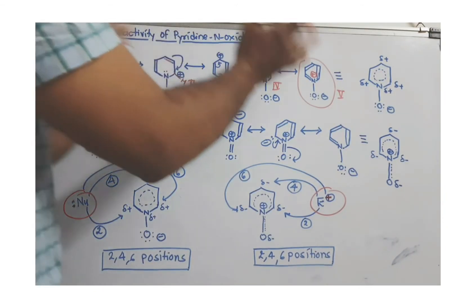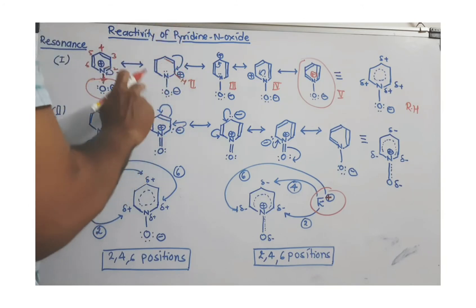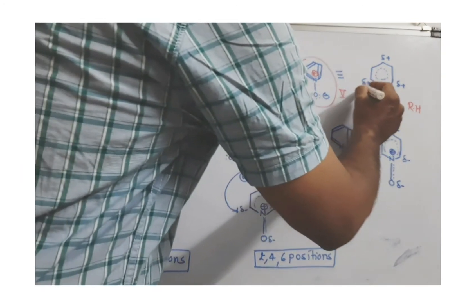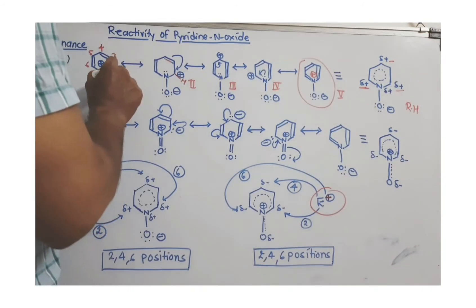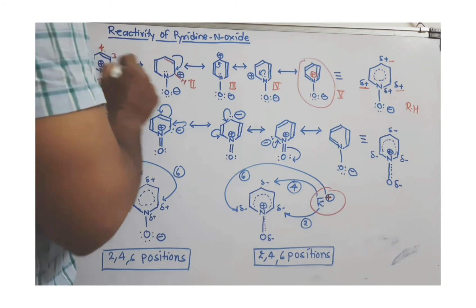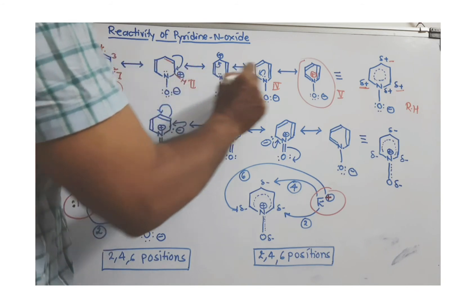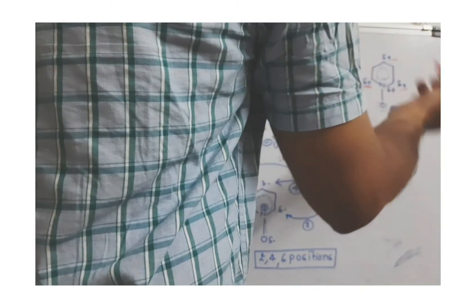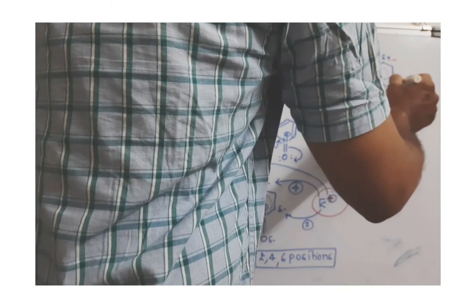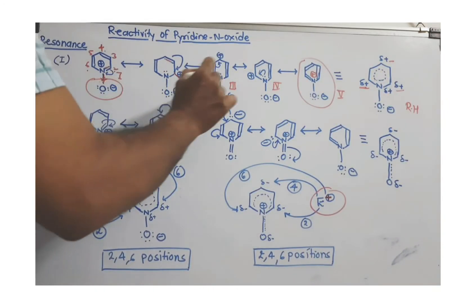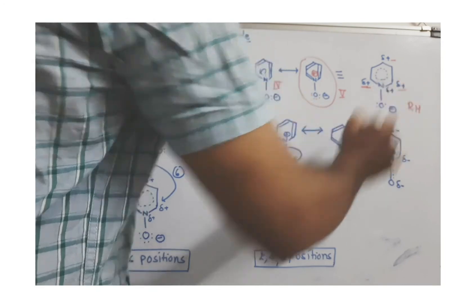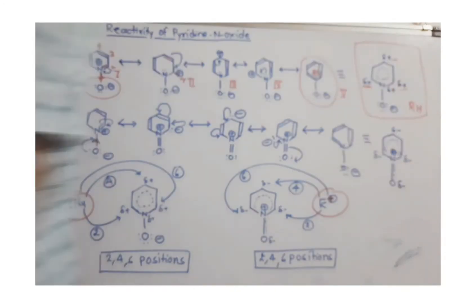After drawing these five resonating structures, they are combined into a resonance hybrid. The double bond is delocalized over all carbons, shown by a circular dotted line. Partial positive charges (δ+) appear at carbon numbers 2, 4, and 6. Nitrogen shows only a partial positive charge since it carries a full positive charge in some structures but not all. The negative charge on oxygen is constant throughout all structures, so a full negative charge is shown on oxygen in the resonance hybrid.